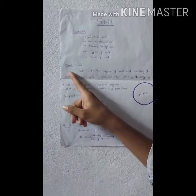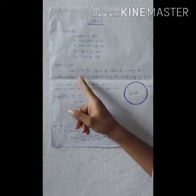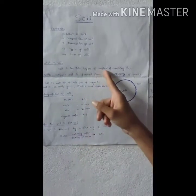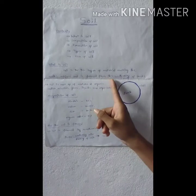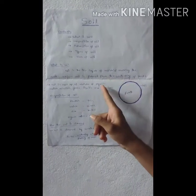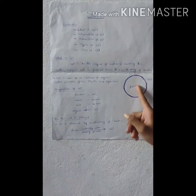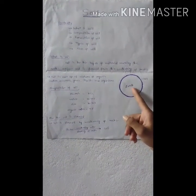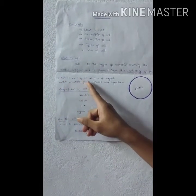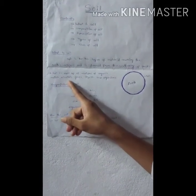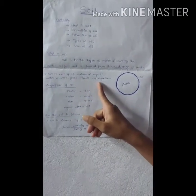First, what is soil? Soil is the thin layer of material covering the earth's surface, and it is formed from the weathering of rocks. It is the topmost layer of earth. Soil is a mixture of organic matter, minerals, gases, liquids, and organisms.